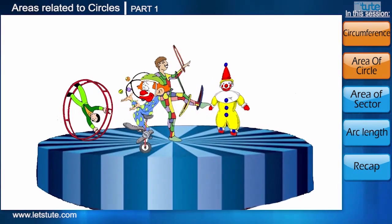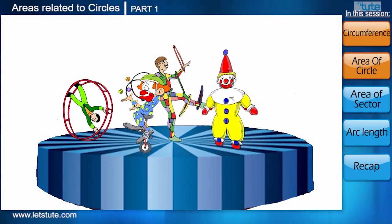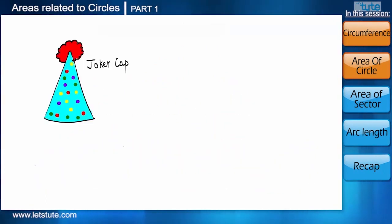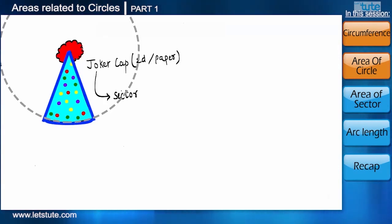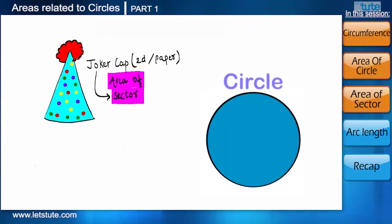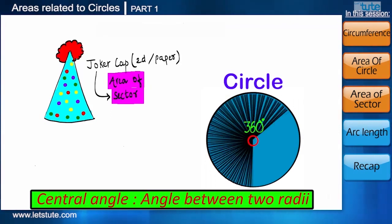Let's move ahead and learn few more interesting concepts about a circle. We can see that on this stage, the most nerved artist is the joker. We all have seen a joker cap. If we see it in 2D or when we draw it on a paper, it will look something like a sector. Now if we have to find its area, how can we do that?